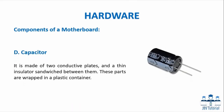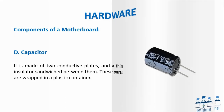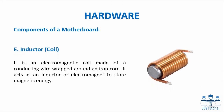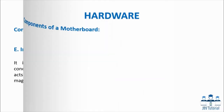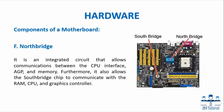Capacitor: It is made of two conductive plates and a thin insulator sandwiched between them, wrapped in a plastic container. Inductor Coil: It is an electromagnetic coil made of a conducting wire wrapped around an iron core. It acts as an inductor or electromagnet to store magnetic energy. Northbridge: It is an integrated circuit that allows communications between the CPU interface, AGP, and memory. It also allows the Southbridge chip to communicate with the RAM, CPU, and graphics controller.